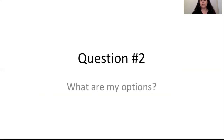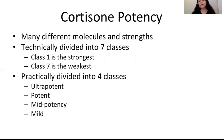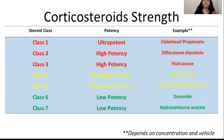Let's move on to question two: what are my options for topical corticosteroids? We have to look at potency and different vehicles. Corticosteroid potencies are technically divided into seven classes based on the vasomotor assay, but clinically we divide them into four: mild potency, mid-potency, potent, and ultrapotent. It's important to note that the same medication in an ointment will be stronger than that same medication in a cream — so the base can impact potency.